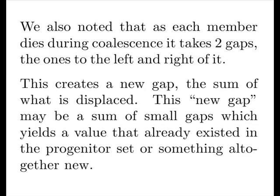We also noted that as each member dies during coalescence, it takes two gaps, the ones to the left and right of it. This creates a new gap, the sum of what is displaced. This new gap may be a sum of small gaps which yields a value which already existed in the progenitor set, or something altogether new.